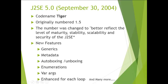The next version is J2SE 5.0, released on 30th September 2004, with the code name 'Tiger'. Originally numbered 1.5, the number was changed to better reflect the level of maturity, stability, scalability, and security. New features introduced include generics, metadata (annotations), auto-boxing/unboxing, enumerations, variable-length arguments, and the enhanced for-each loop.